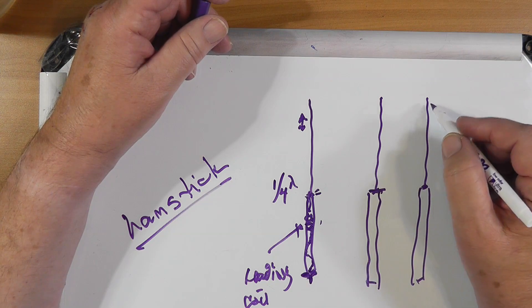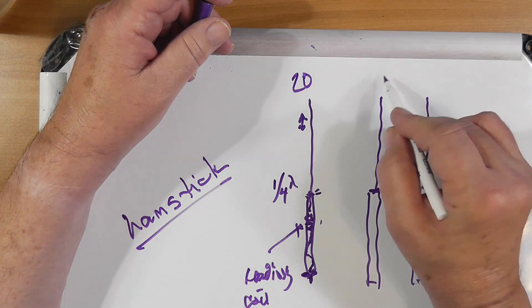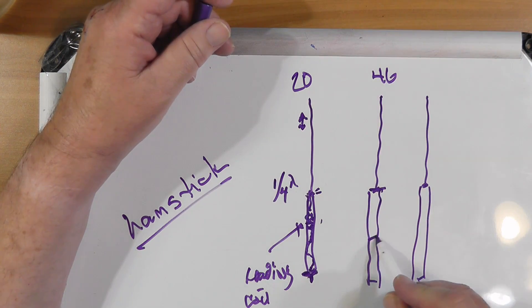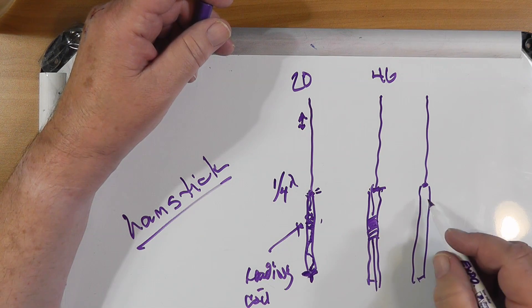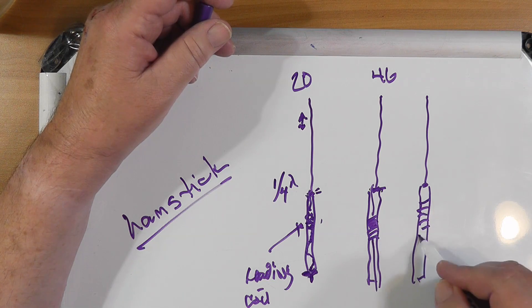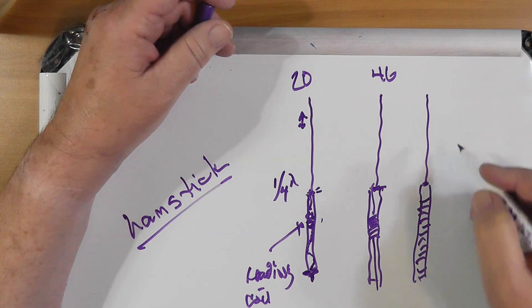The lower the coil, like if this is 20 meters, if this is 40 meters, it'll have a much larger loading coil on it. And if it's 80 meters, it has a really large loading coil on it.